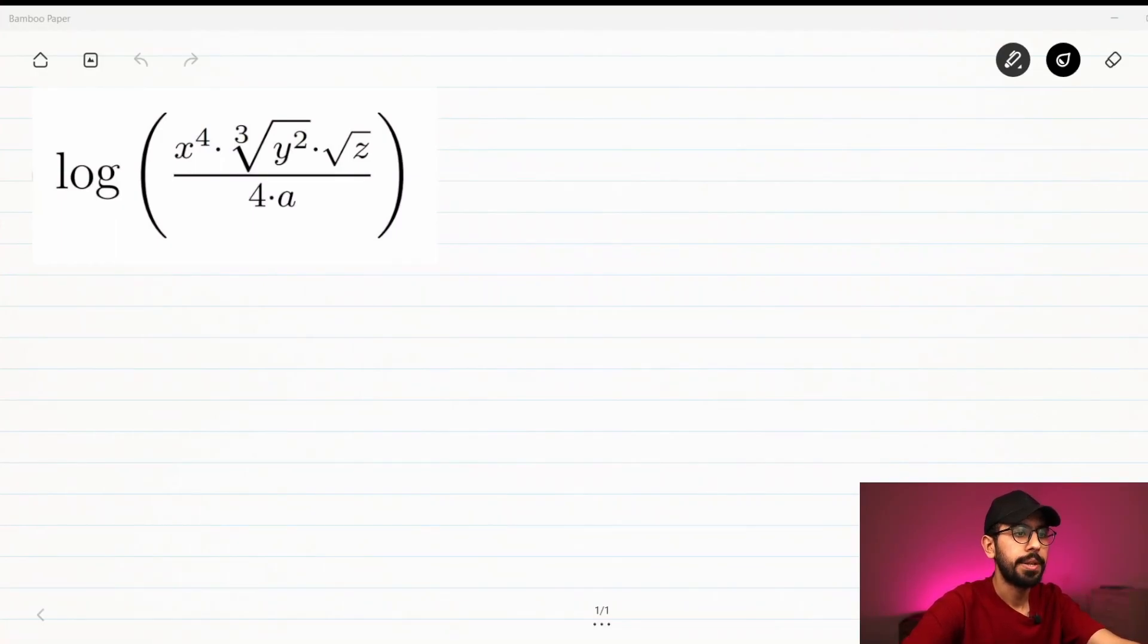First thing you need to do is use the first rule of logarithm, which is that when we have two terms or more multiplied to each other, that means in logarithm they are added to each other. So the result will be log x to the power of 4 plus log the cube root of y squared plus log the square root of z.